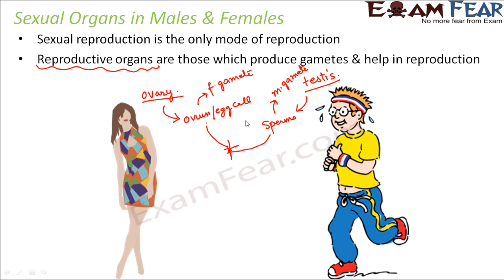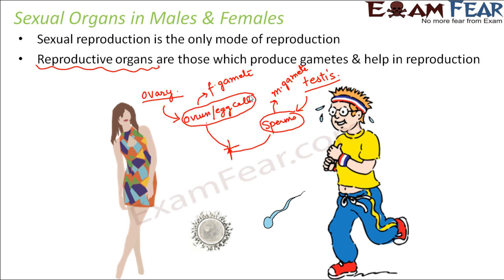This male gamete and the female gamete fuse together to form a zygote, and that is when fertilization takes place. So for reproduction to take place, sperm production and ovum production is necessary. Only when sperm and ovum meet can reproduction take place. These are the primary sexual organs, present inside a male and a female since birth, but they become active and start functioning during adolescence.